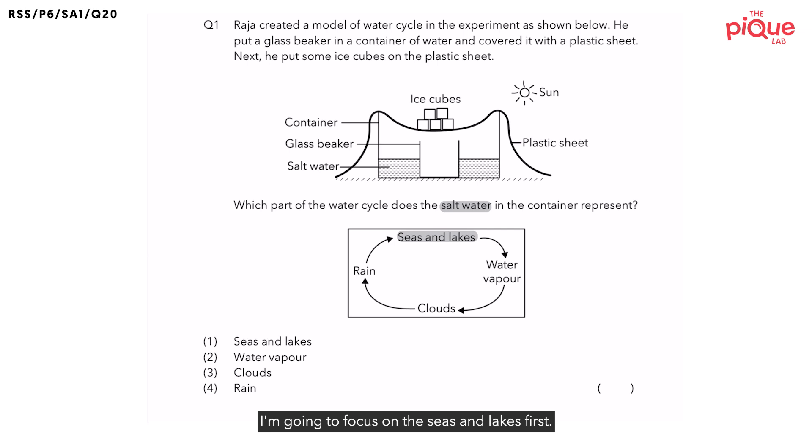I'm going to focus on the seas and lakes first. This is what we call the water bodies on Earth. So which state of matter do you think these water bodies are in? Are they solid, liquid or gas? They are in liquid state.